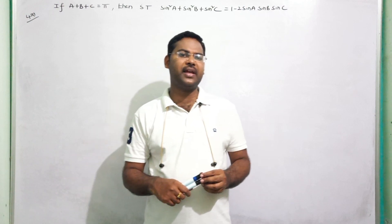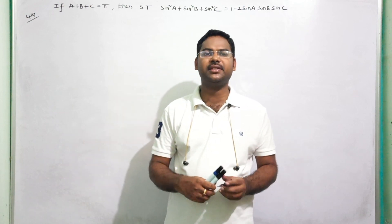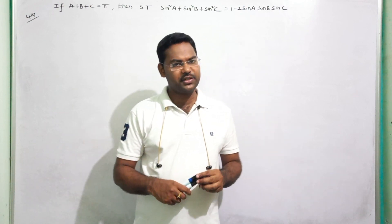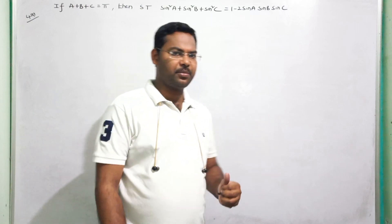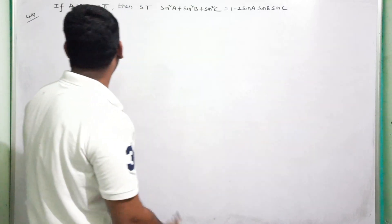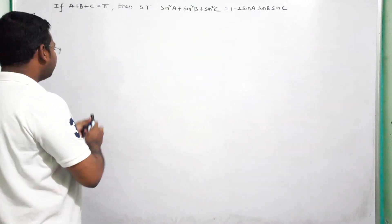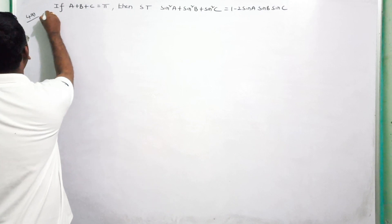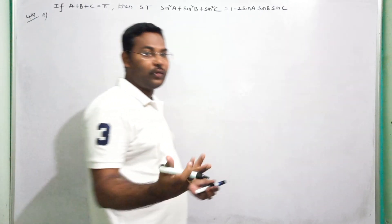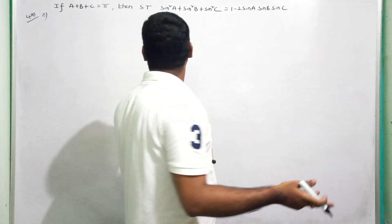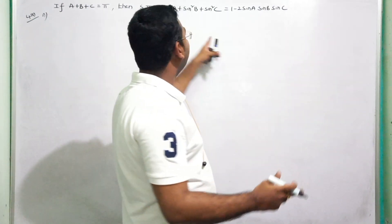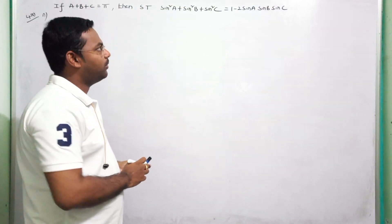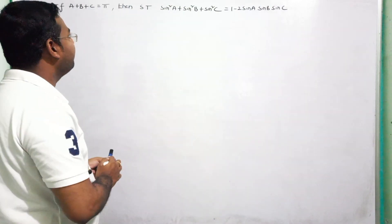This is the first topic in Maths 1A — Trigonometric Ratios up to Transformations. We discuss this problem: given A plus B plus C is equal to 180 degrees, and the sum of angles of a triangle equals 180 degrees, show that sin²A plus sin²B plus sin²C is equal to 1 minus 2 sinA sinB sinC.